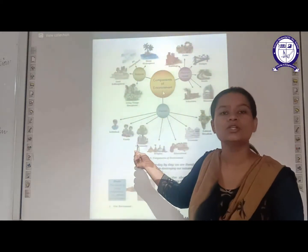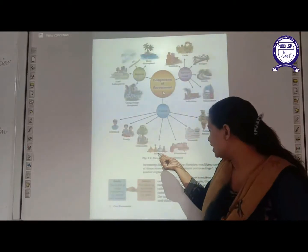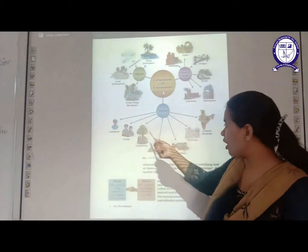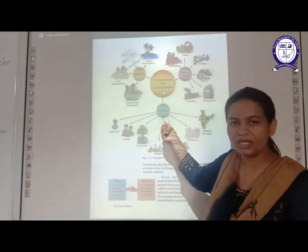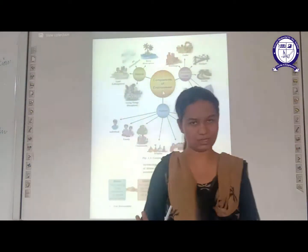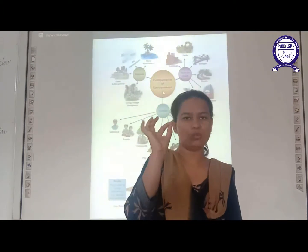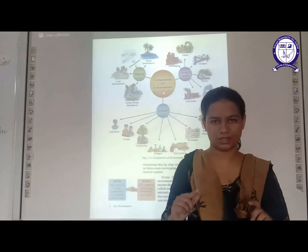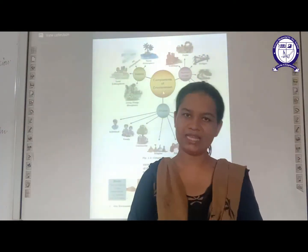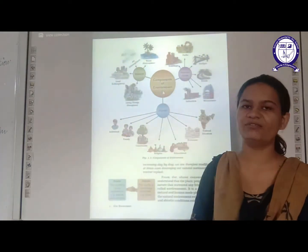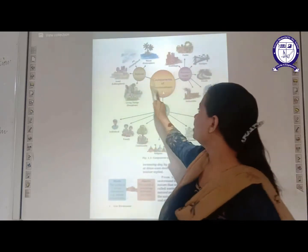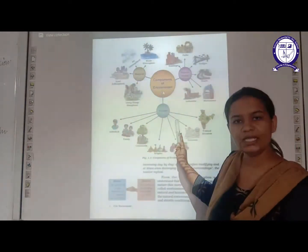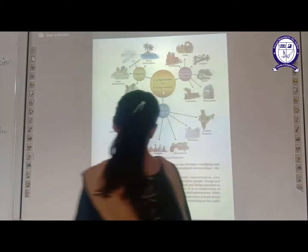Different religions, educational institutes — all these components form the human component. So what have we discussed? First: what is environment? Everything that surrounds us is called as environment. Then: components of environment. These are natural components, human-made component, and human. Now let's discuss ahead — we have further two types, or you can say elements, of environment.